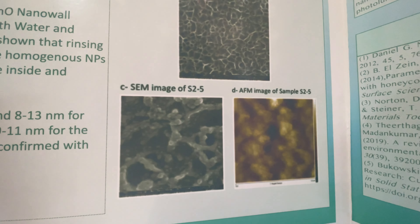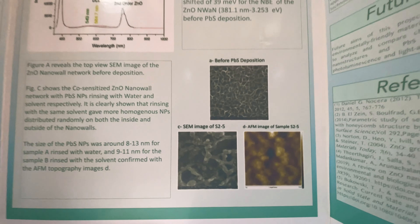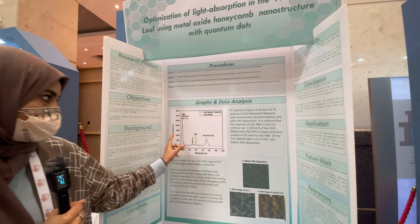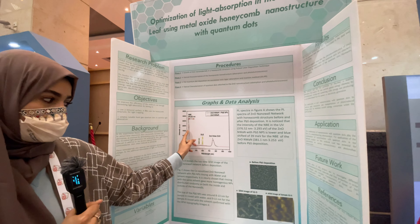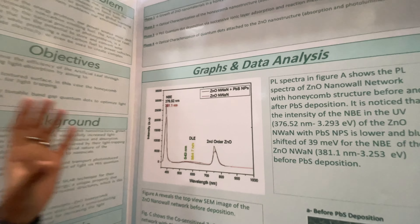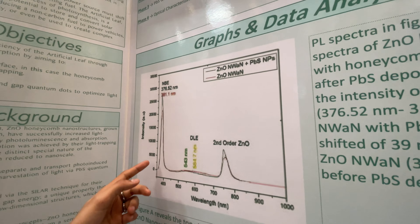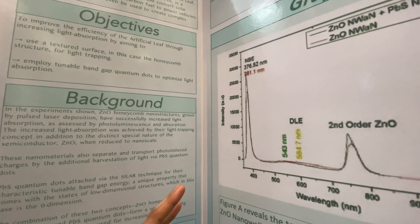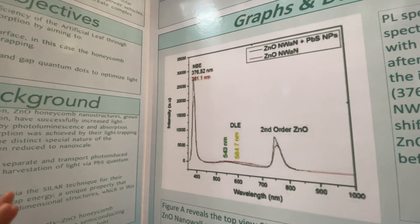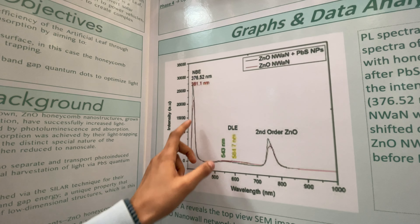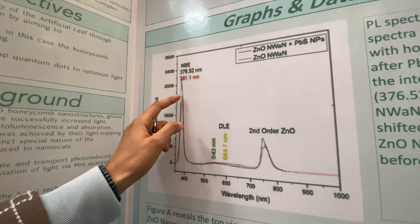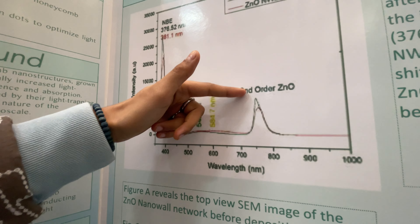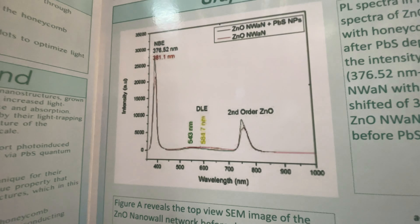In the experiment here, we fabricated the photocatalyst and assessed it before and after applying the quantum dots. As you can see in the graph, the red line represents the zinc oxide nanostructures before the quantum dots were attached. This graph represents photoluminescence over a parametric study — so this is over a long amount of time. The black line is when quantum dots are attached, and as you can see, there is a rise in photoluminescence.